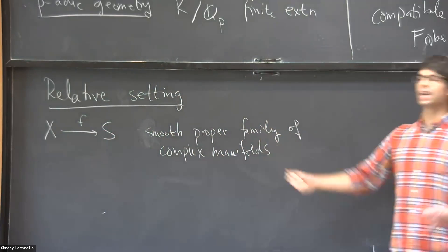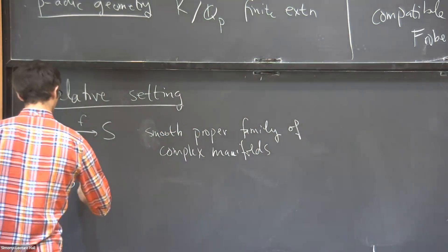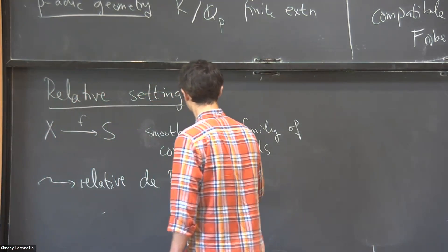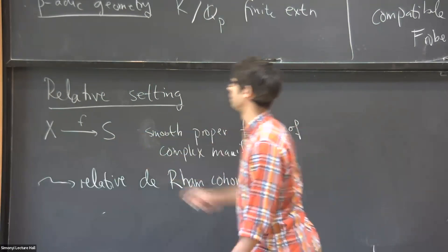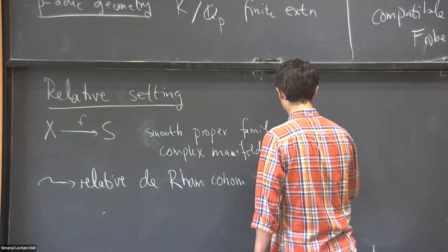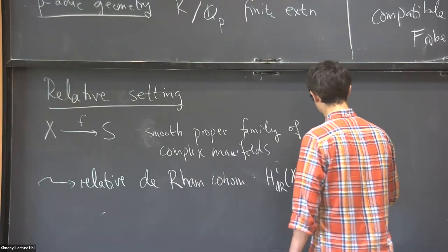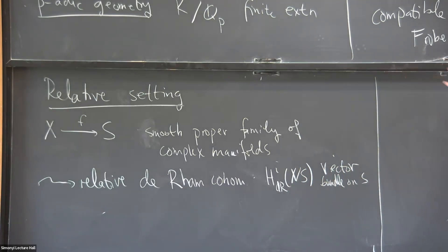And we can try to understand what is the de Rham cohomology of the fibers of this family. And there's a very nice way to package it in terms of a certain vector bundle for this complex manifold S. Now that we've seen the de Rham theorem, it's natural to wonder, can we still recover the singular cohomology of the fibers from this de Rham cohomology? And in fact, the answer is yes.